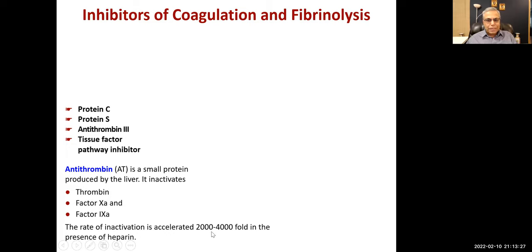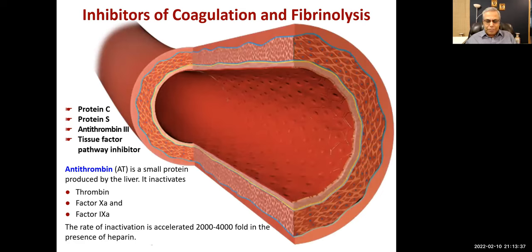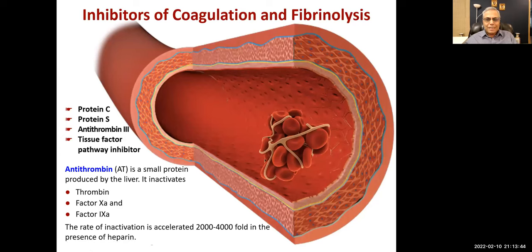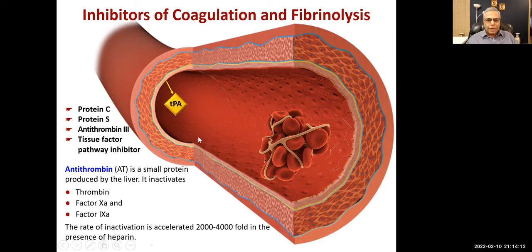The rate of inactivation by antithrombin is accelerated 2000 to 4000-fold in the presence of heparin and fondaparinux. Once the clotting cascade starts, the clot goes on expanding until something stops it. One factor that can break down the clot is tissue plasminogen activator, and we will discuss drugs that work like tissue plasminogen activators.